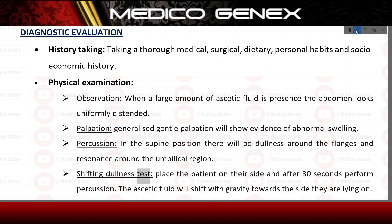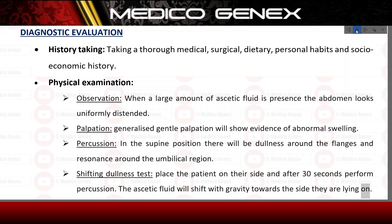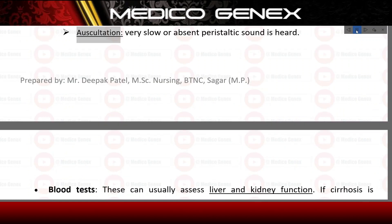The shifting dullness test: place the patient on their side and after 30 seconds perform percussion — the ascitic fluid will shift with gravity towards the side they are lying on. Auscultation: very slow or absent peristaltic sound is heard.